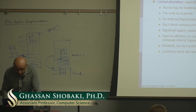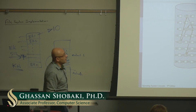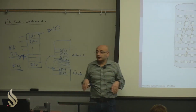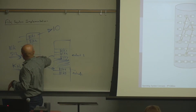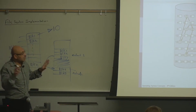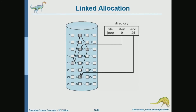With linked allocation, you don't care about finding contiguous blocks. If a file consists of a hundred blocks, you can use any hundred blocks and link them together — each block points to the next. For example, this file starts at block 9. Block 9 has a pointer to the next block, which happens to be block 16. Block 16 has a pointer to block 1. Block 1 points to block 10, and so forth.